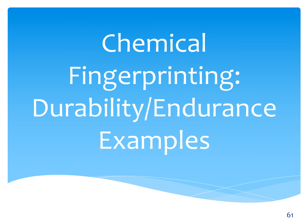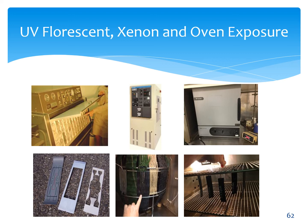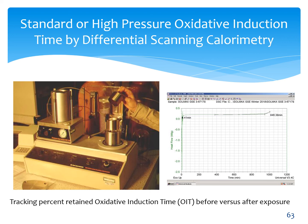In regard to chemical fingerprinting and durability — these are often considered reduction factors or partial factors of safety. UV degradation in the laboratory can come in the form of UV fluorescent, xenon arc, or oven aging — oven aging is not UV, it's degradation through heat. For olefins, you typically perform standard or high-pressure OIT through differential scanning calorimetry, tracking how the baseline material behaves and then how it behaves after exposure over time.